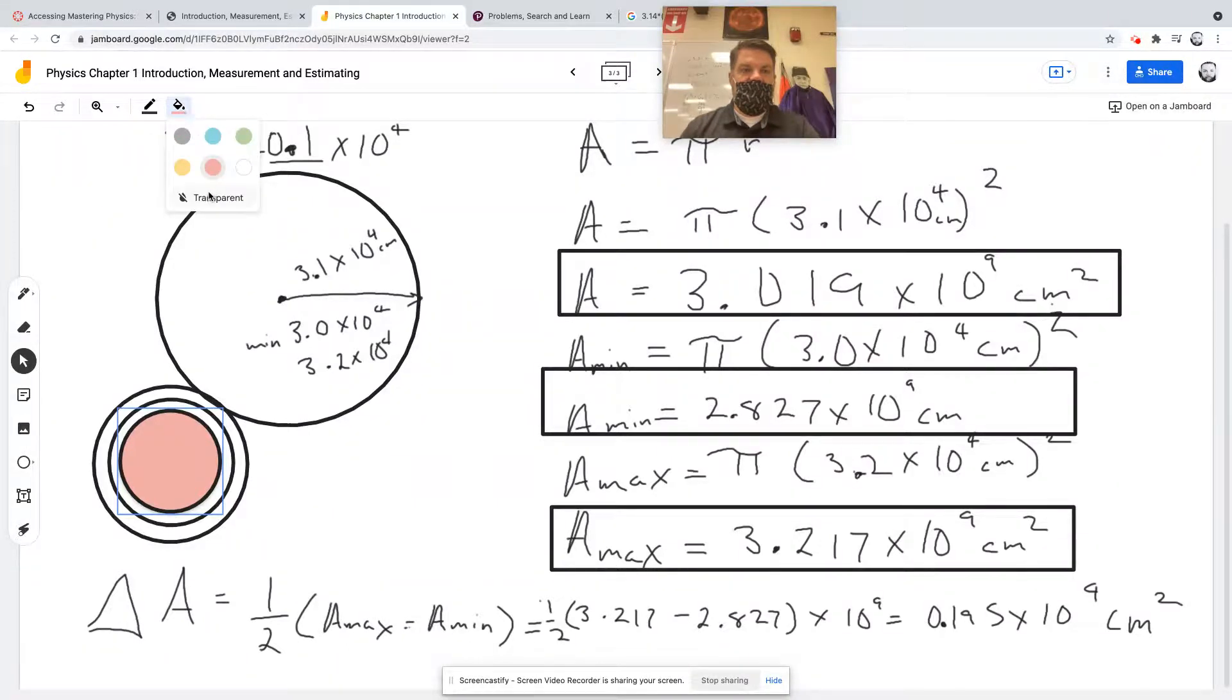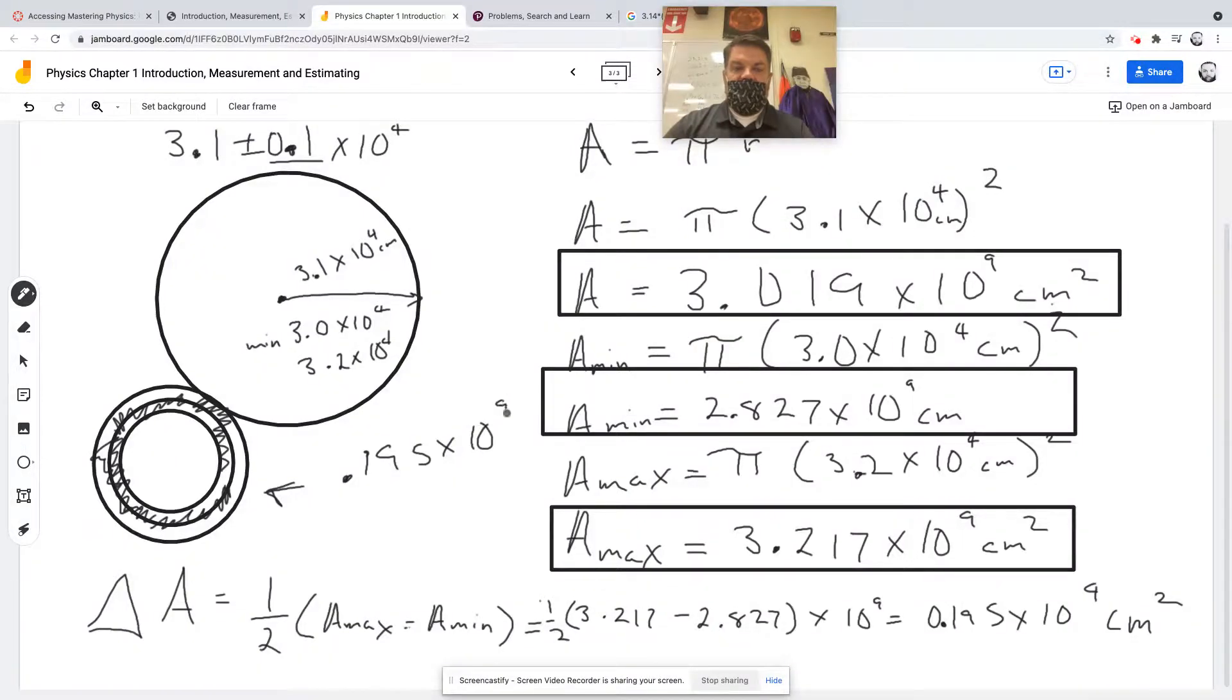What I'm measuring is the uncertainty—the area between the smaller and larger possible circles. That shaded area equals 0.195 times 10 to the 9th centimeters squared. With one radius bigger and one smaller, we have two circles. The difference between their areas is the area of uncertainty.